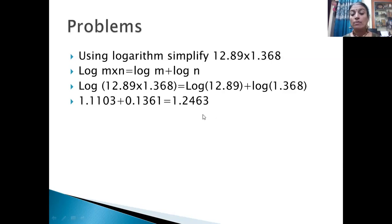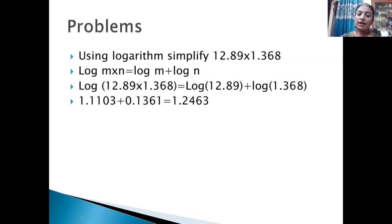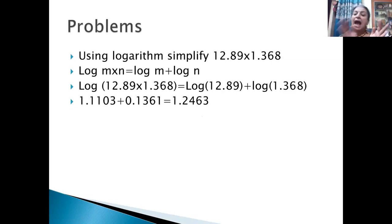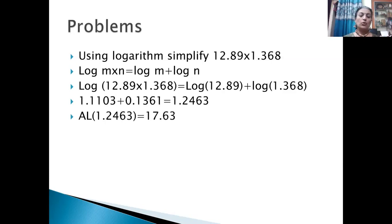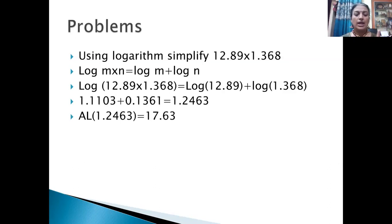The problem is now half solved. What remains is anti-logarithm. You have converted the number into log, so finally you should re-convert it — that is anti-log. Log means you are encoding it, and then you decode it by anti-log. So now you have to refer the anti-log table for anti-log of 1.2463. The rule for anti-log is the reverse of log.